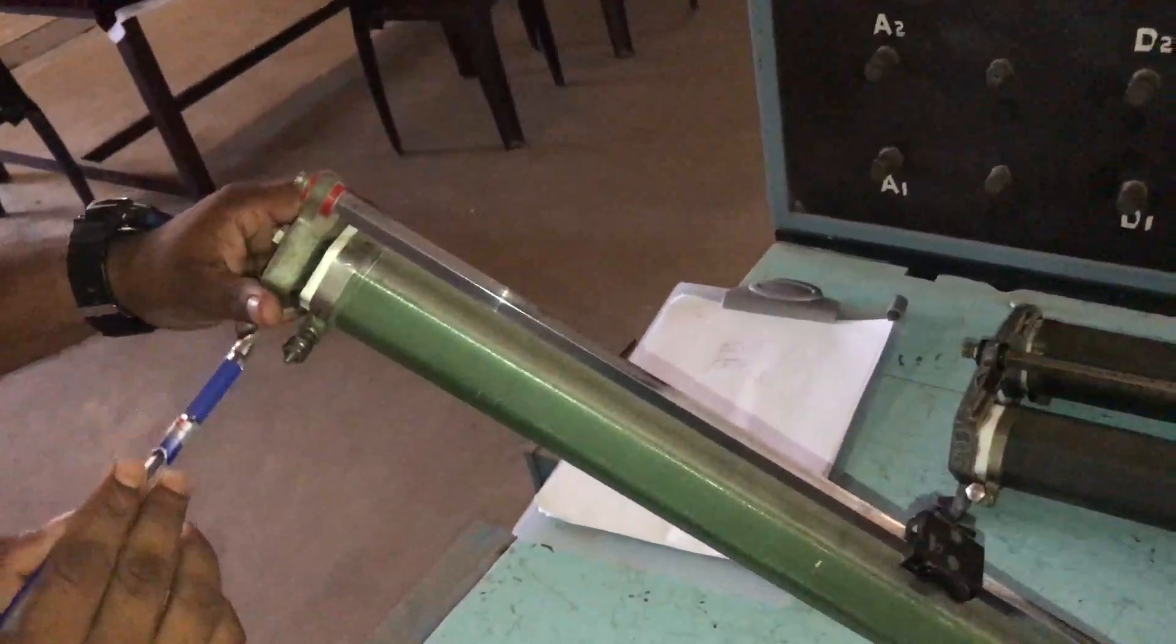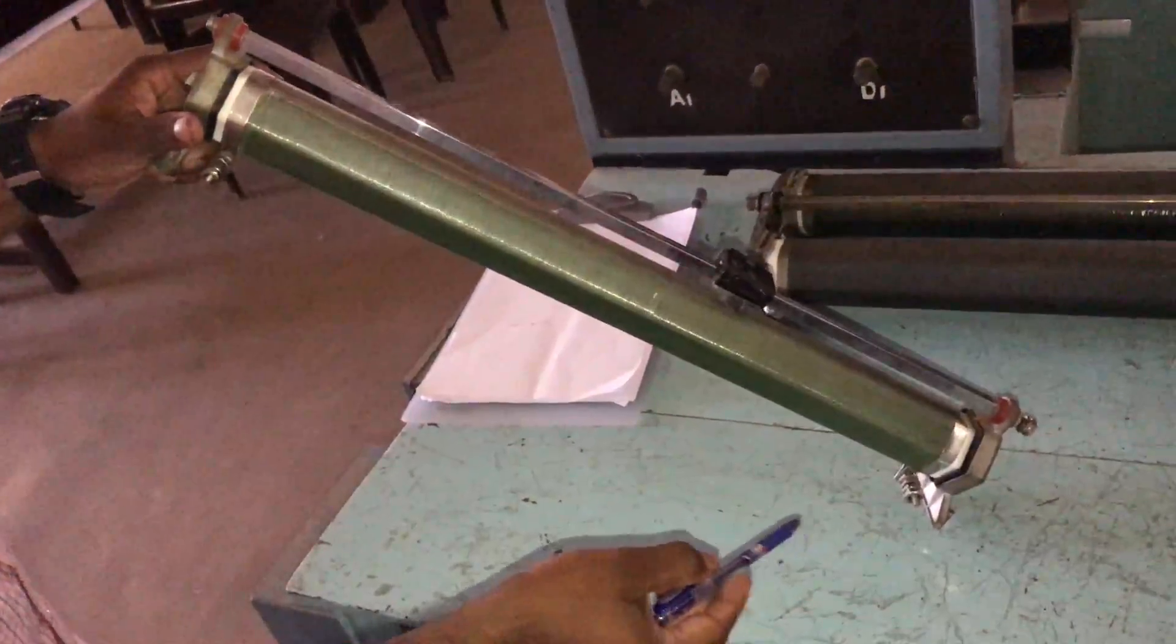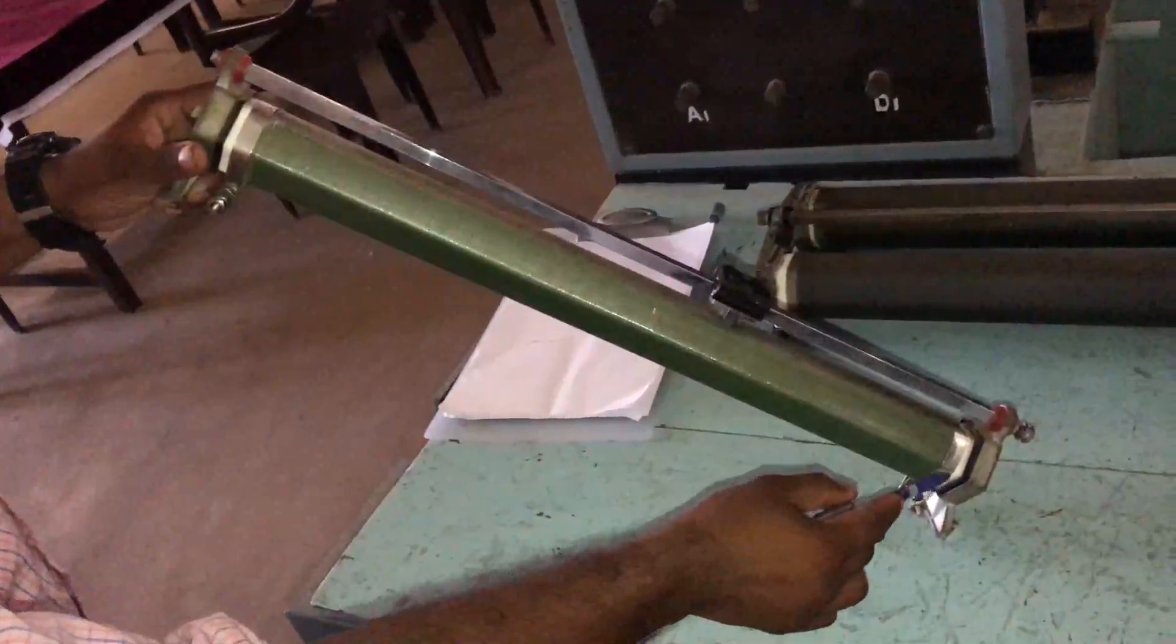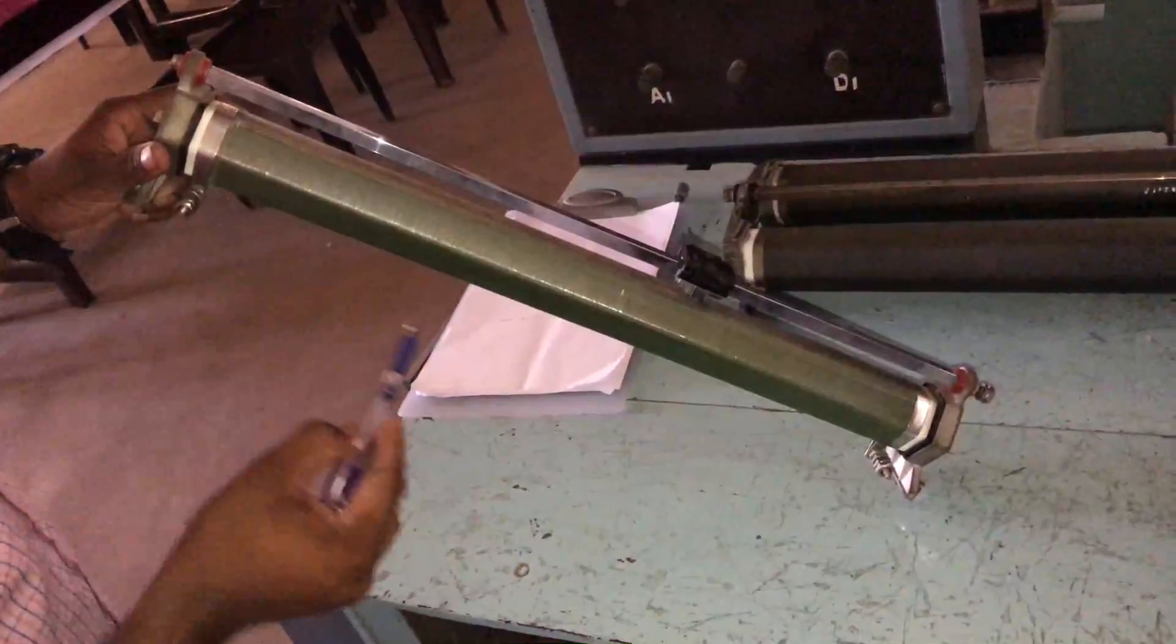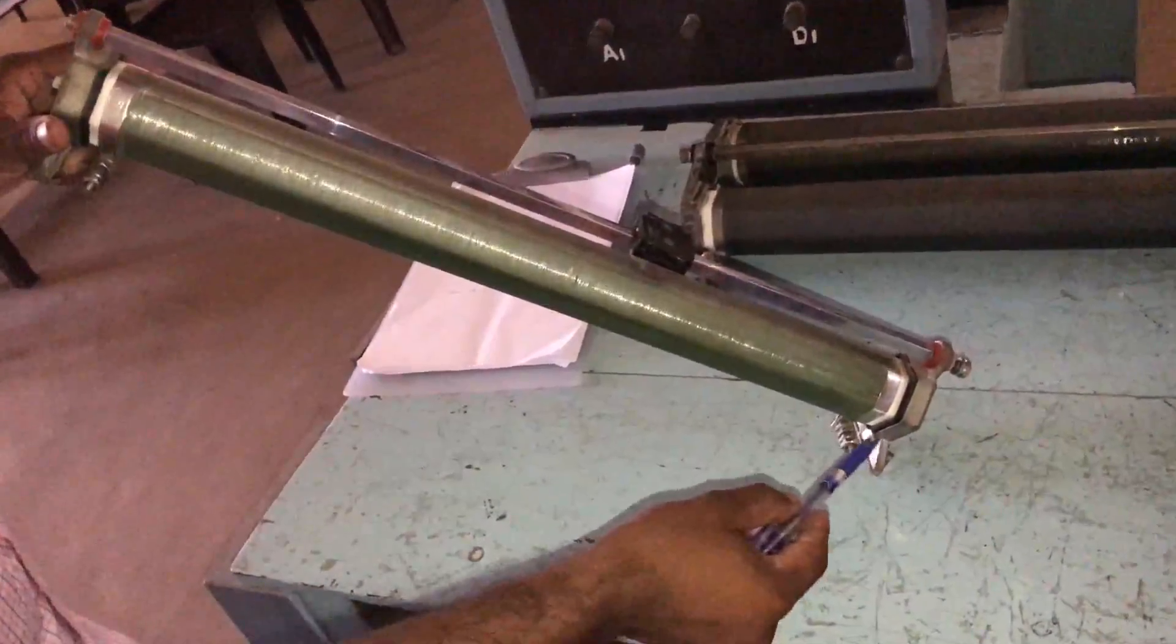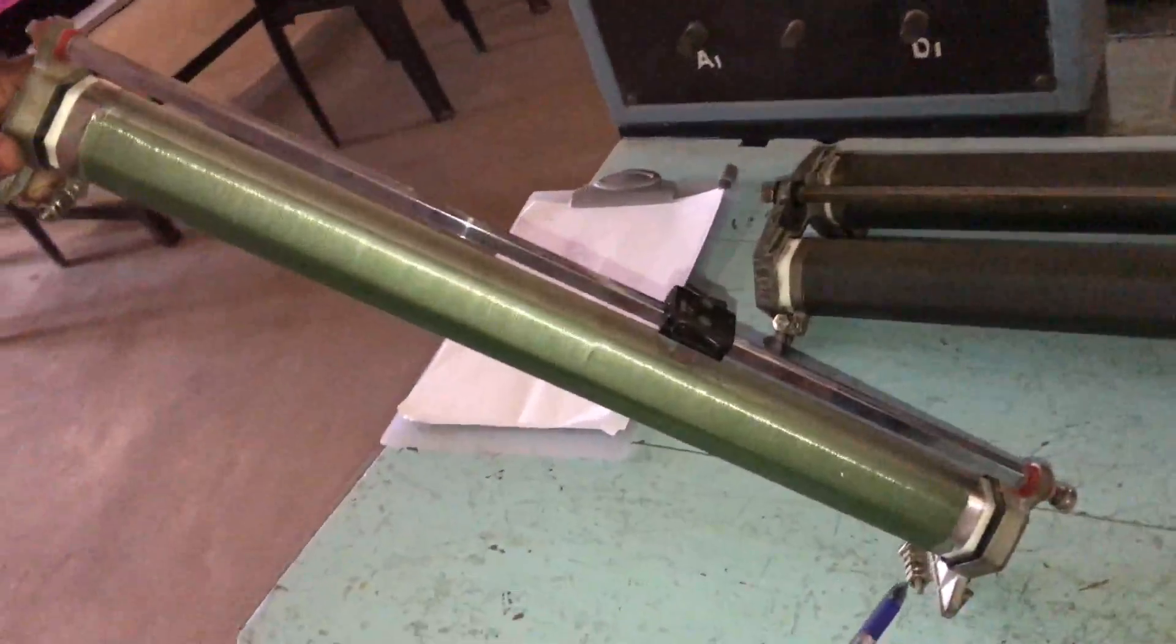This instrument is called rheostat, also called variable resistance. It has two common points: one is here and another starts from here. Then from here is the variable point.